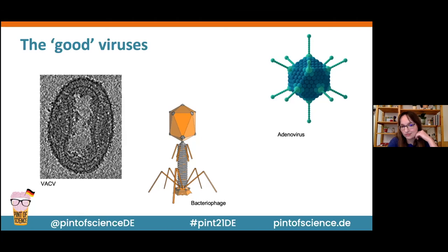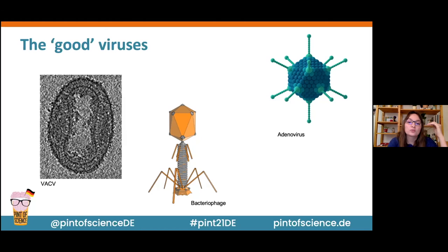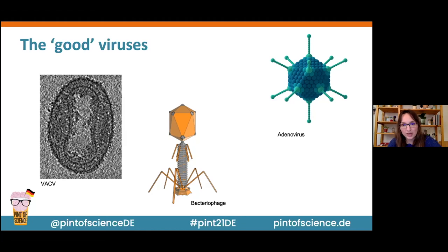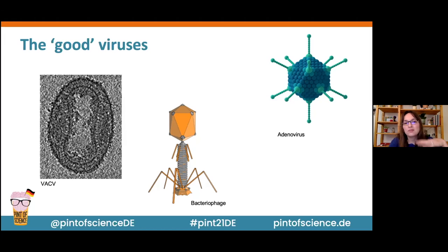We also have bacteriophages — I think the coolest-looking virus we know of at the moment. This is a virus that only infects bacteria, which is very interesting because many diseases caused by bacteria are no longer treatable with antibiotics, as they've been over-prescribed and we're running out of good ones. What's now being studied is whether we can use bacteriophages against human diseases caused by bacteria. Additionally, the CRISPR system — which won the Nobel Prize recently — is an exciting genome editing tool that originated as a bacterial defense system against bacteriophages. Without bacteriophages, we wouldn't have CRISPR.